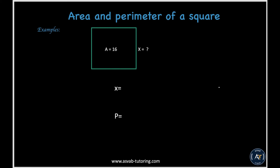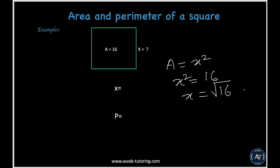In the next problem, the area of a square is given and you need to find the missing side. Since area equals x squared, if area is 16 then x equals the square root of 16, which is 4. The perimeter equals 4 times x, so 4 times 4 equals 16.